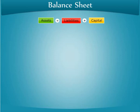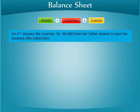Now let us take an example of a crucial transaction of one quarter. The first example: on 2nd January, Ria receives Rs 50,000 from her father to start her business. We will pass a journal entry — Cash/Bank Account debited by 50,000 and Capital Account credited by 50,000. This is the journal entry that will be passed in the books.